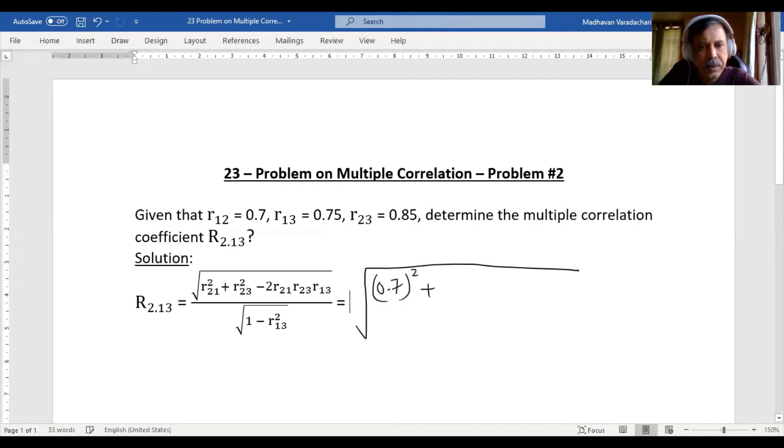...plus r23 is 0.85 squared minus two times r21. Now r21 is nothing but r12, both are the same, so 0.7 multiplied by r23, which is 0.85...